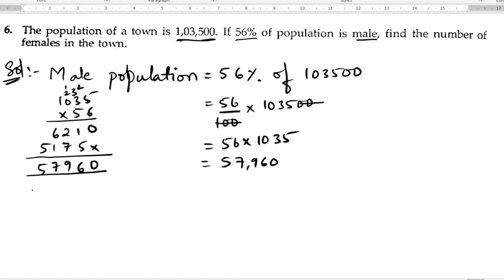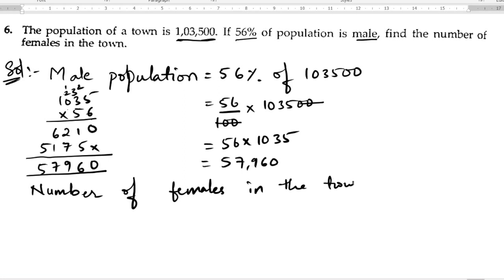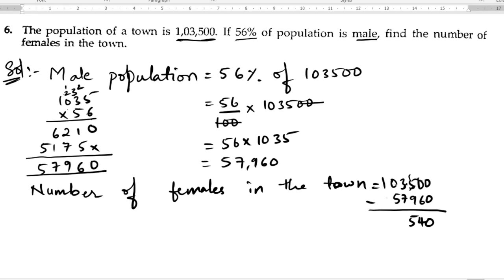Now let us find the number of females in the town. Number of females equals total population minus male population: one lakh three thousand five hundred minus fifty-seven thousand nine hundred and sixty. Subtracting: ten minus six is four, fourteen minus nine is five, twelve minus seven is five, nine minus five is four — giving us forty-five thousand five hundred and forty.